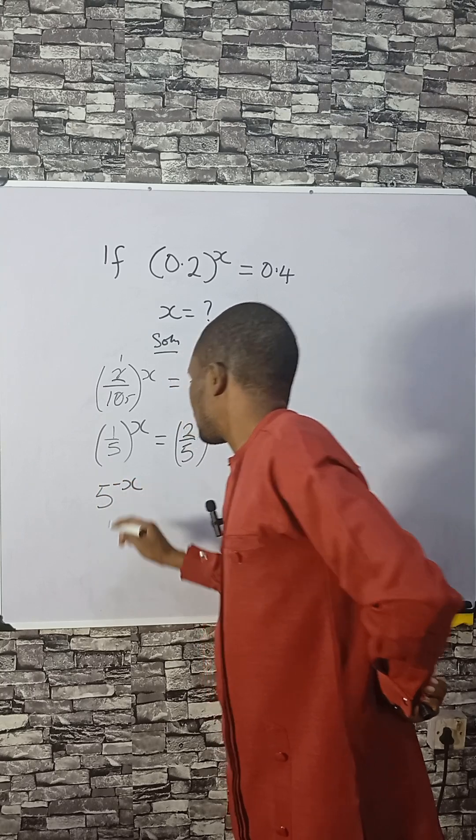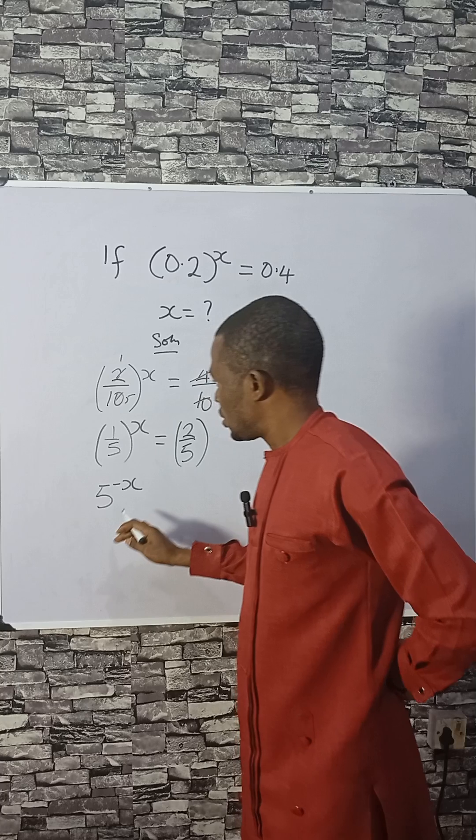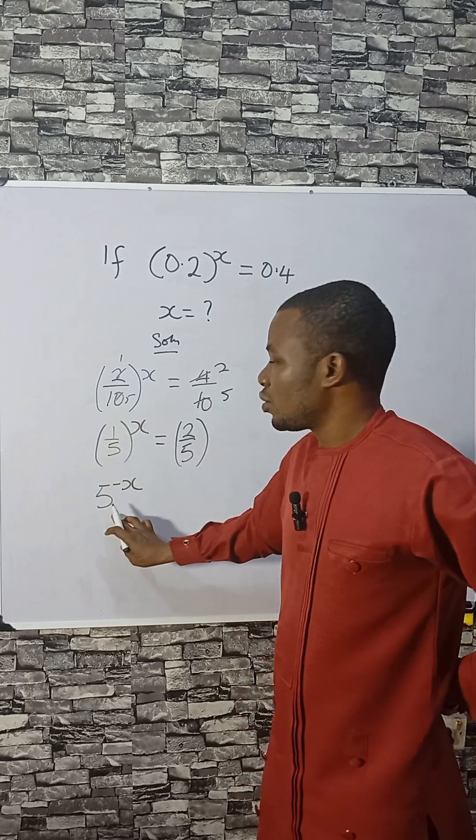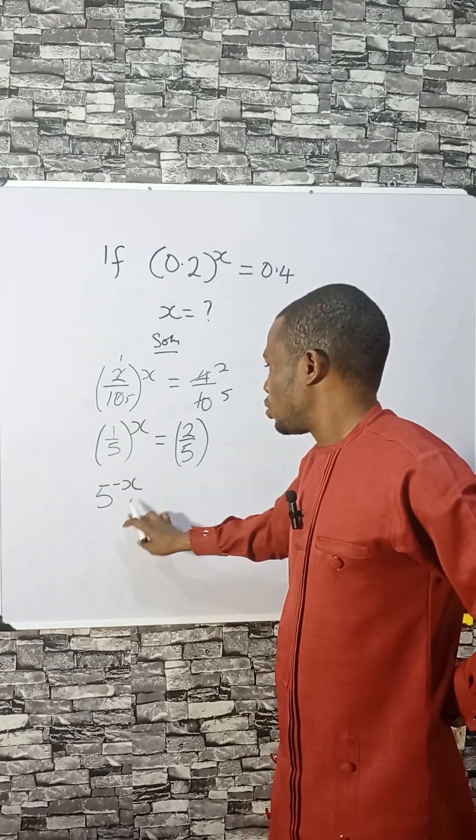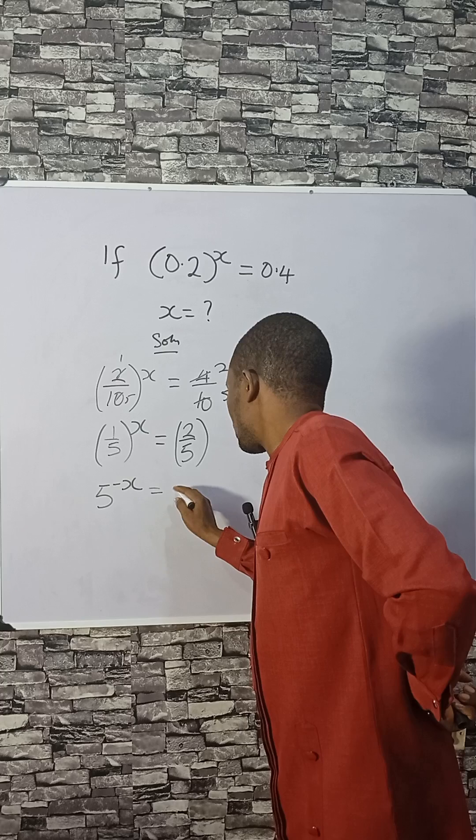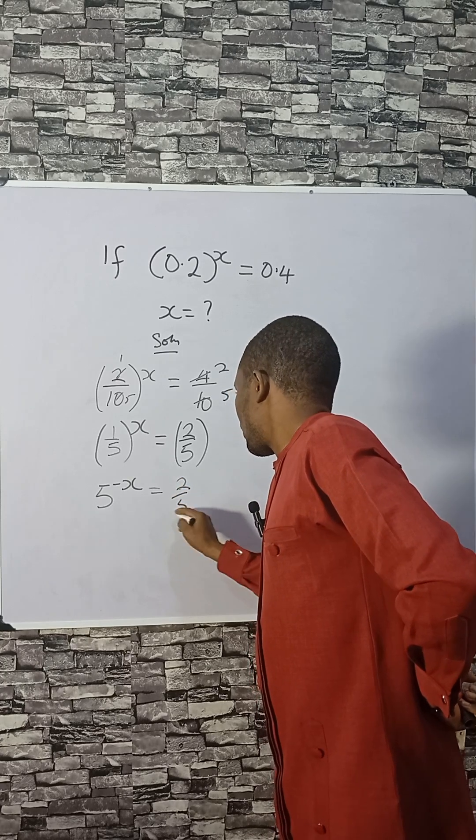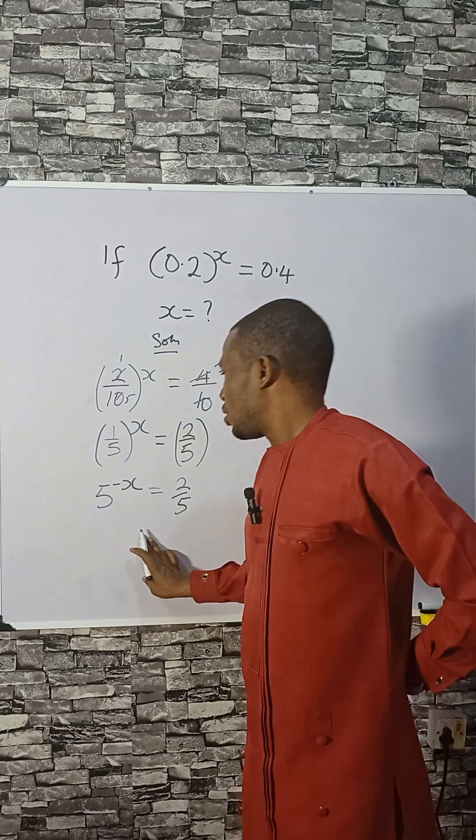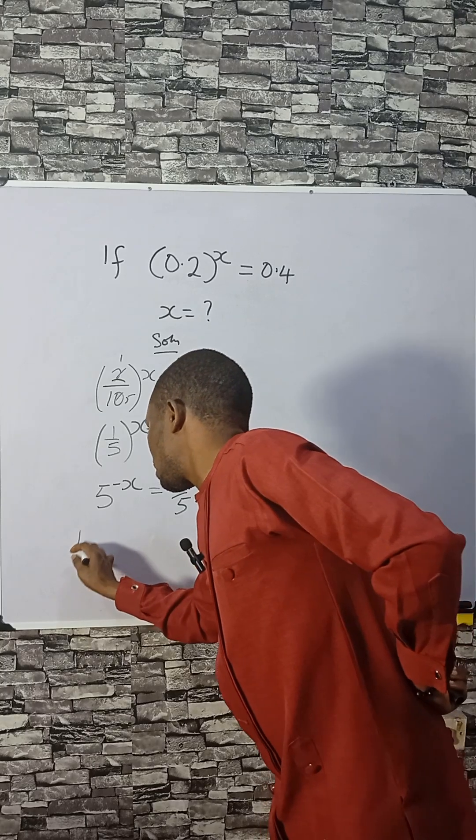We can do something here. 5 raised to the power minus x, this can multiply because 1 over 5 is 5 raised to the power minus 1. So times x gives us 5 to the power minus x. You can apply log, even base 5 to this.